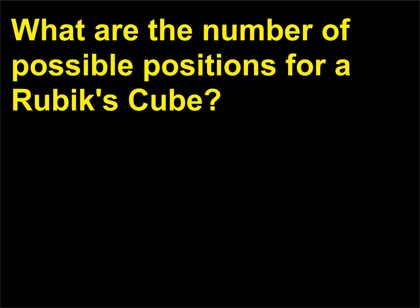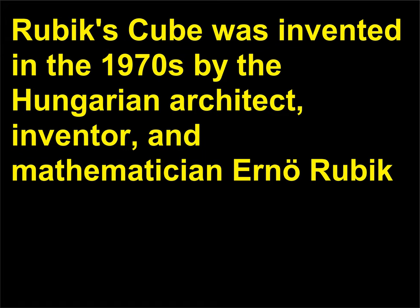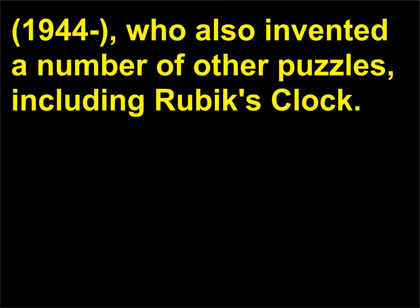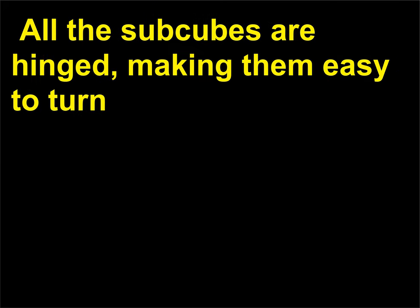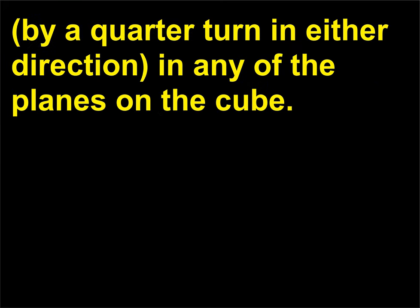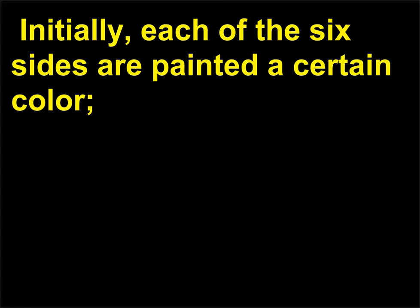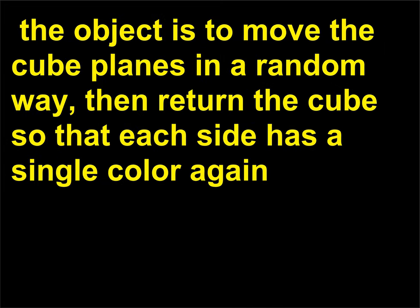What are the number of possible positions for a Rubik's Cube? Rubik's Cube was invented in the 1970s by the Hungarian architect, inventor, and mathematician Ernő Rubik, 1944, who also invented a number of other puzzles, including Rubik's Clock. The cube measures 3×3×3, with a total of 26 subcubes on the outside. All the subcubes are hinged, making them easy to turn by a quarter turn in either direction in any of the planes on the cube. Initially, each of the six sides are painted a certain color. The object is to move the cube planes in a random way, then return the cube so that each side has a single color again.